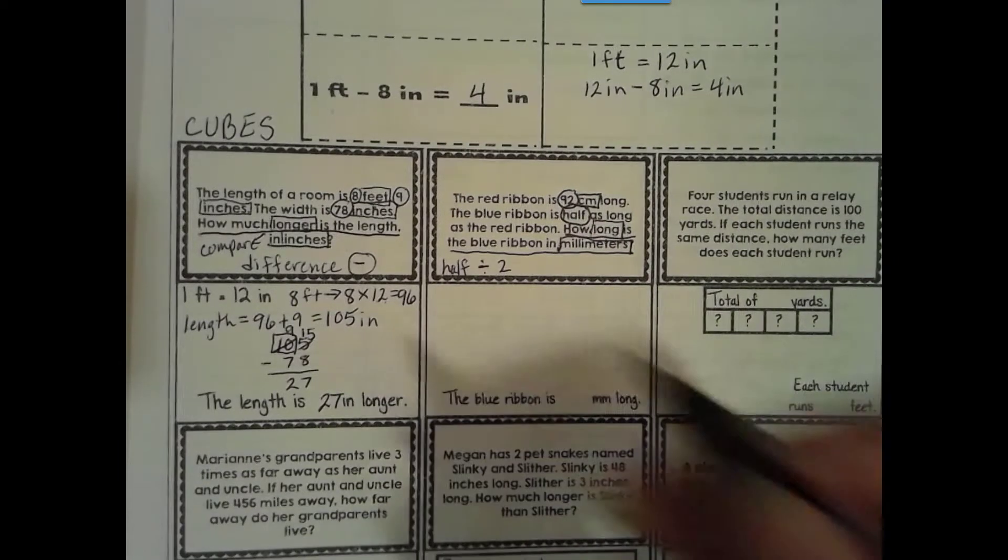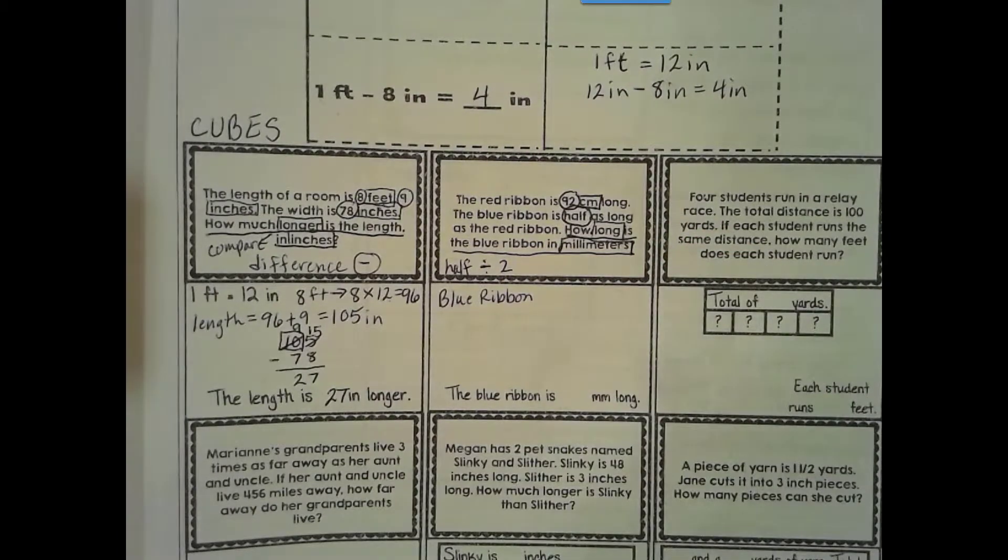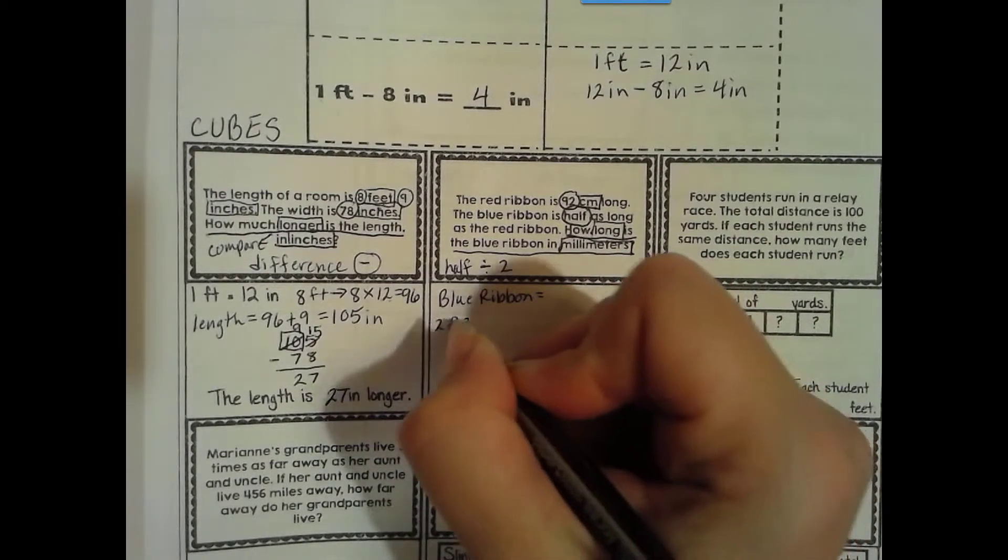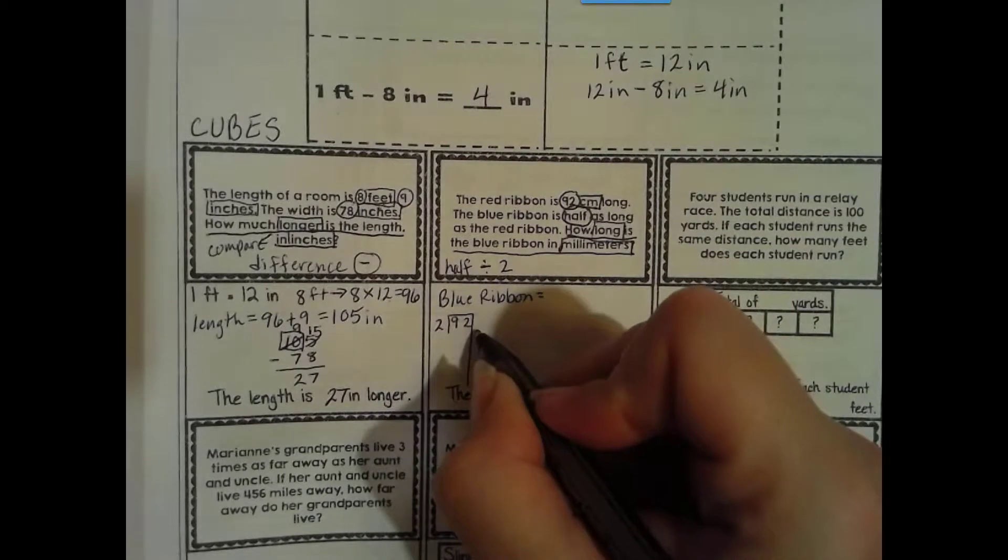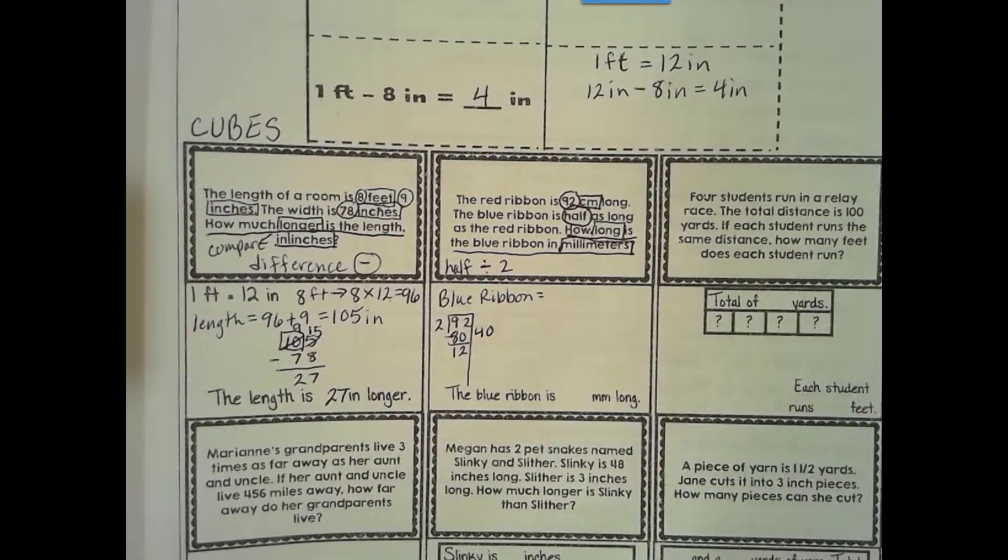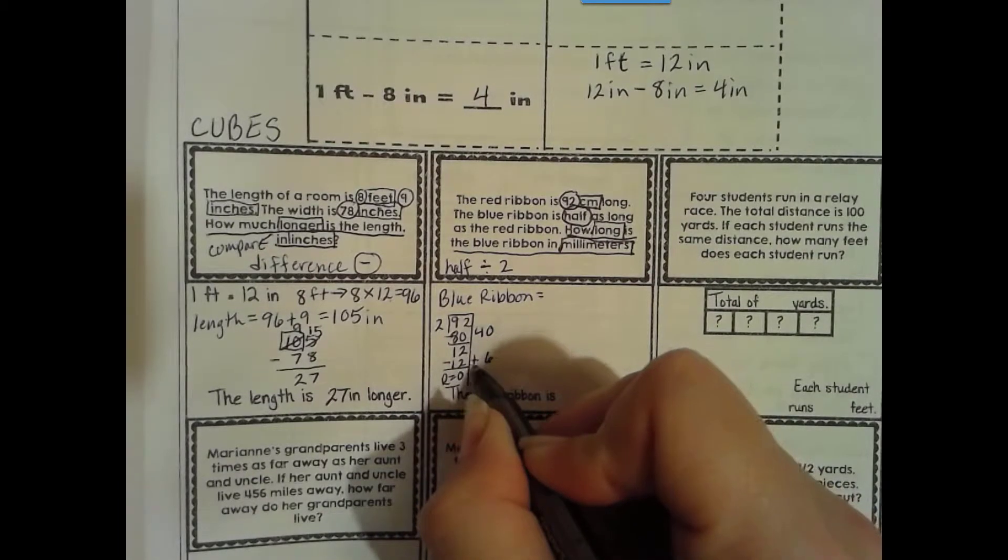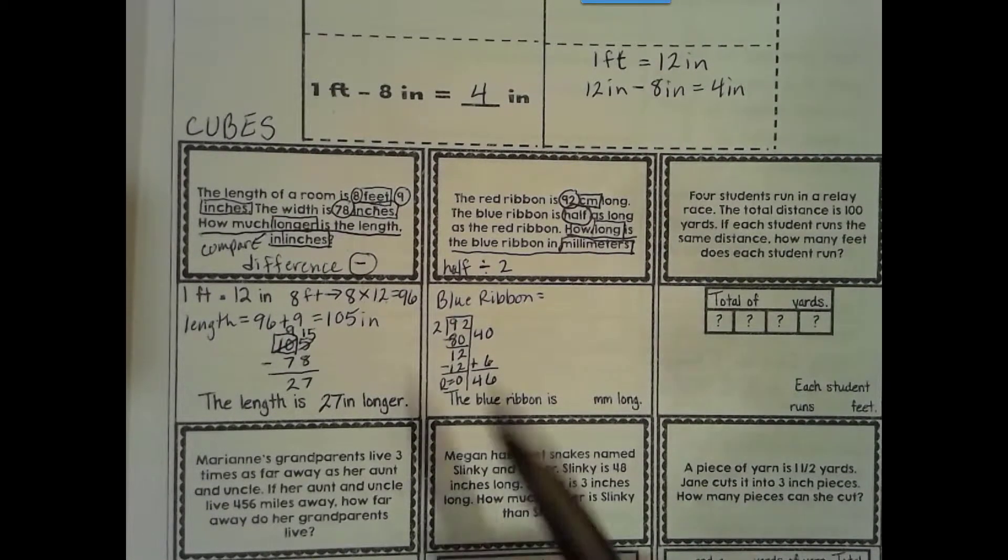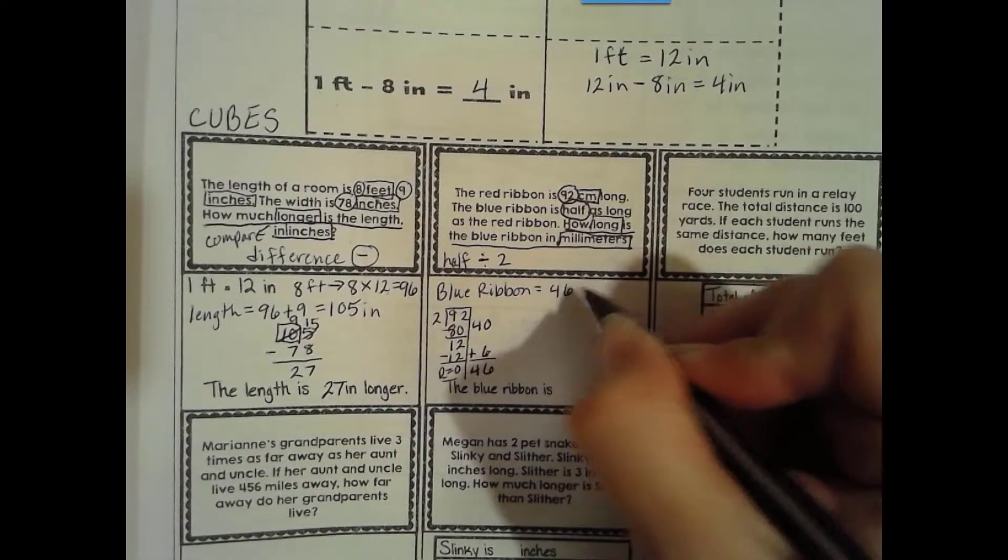So first to figure out our blue ribbon, I have to divide 92 by 2 in half. So let's see, I'm going to do 40 times 2, which is 80. More on top, no need to stop. 6 times 2 is 12. Number's the same. Zero's the game. So I get 46. So the blue ribbon, which is half the length of the red ribbon. The red ribbon is 92. Half of that is 46. So that means the blue ribbon is 46 centimeters.